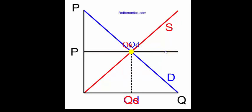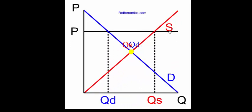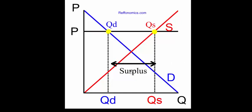If the price goes too high in the market, then the quantity supplied goes up at that higher price, but the quantity demanded goes down because of that higher price. This creates a surplus in the marketplace.